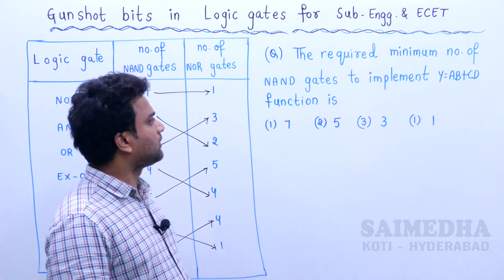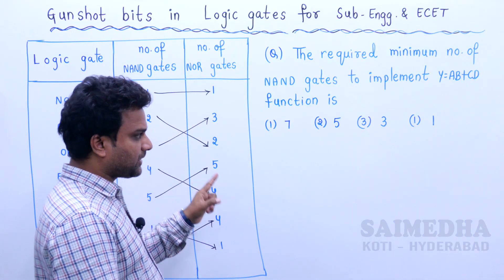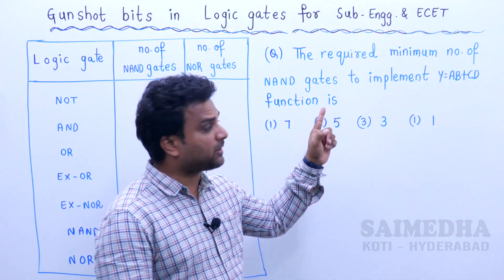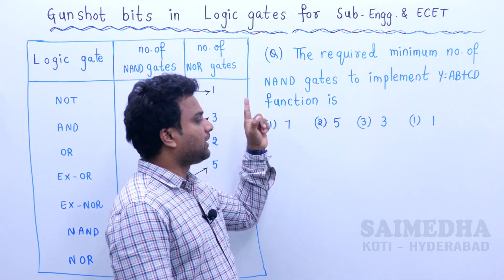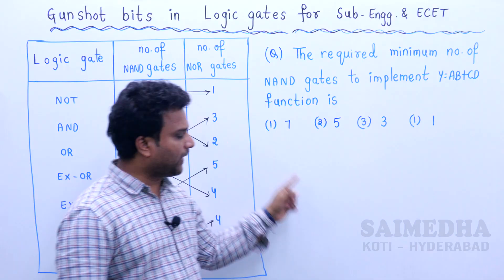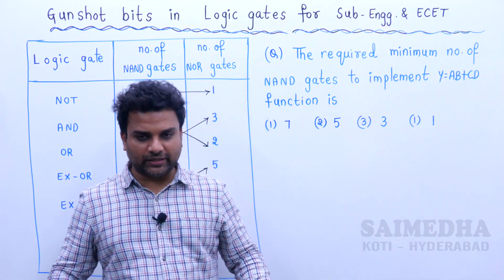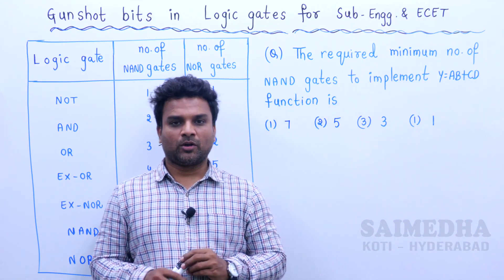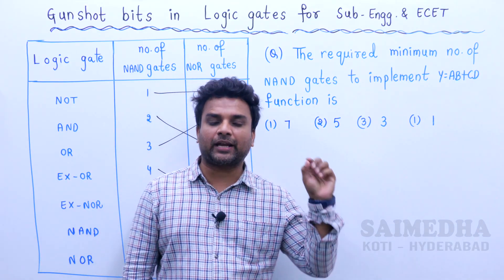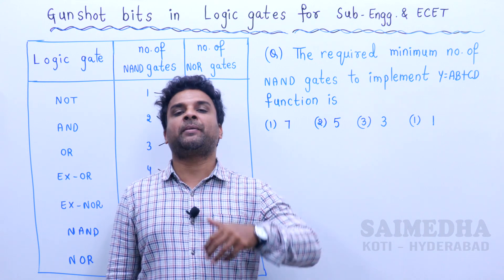The question is: the required minimum number of NAND gates to implement Y equals AB plus CD. The options include 7, 5, 3, 1. What is the answer? Y equals AB plus CD — a Boolean function to be implemented.